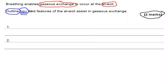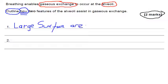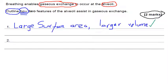So if I'm outlining a feature, I might put that it's got a large surface area — but that still hasn't really answered the question. I then want to say how that feature assists in gas exchange. Based on my knowledge from the previous slide, having a large surface area will result in a larger volume of gas being exchanged. That's one answer that should get you one mark.